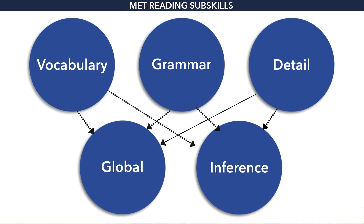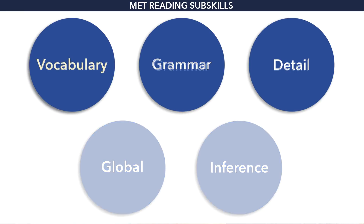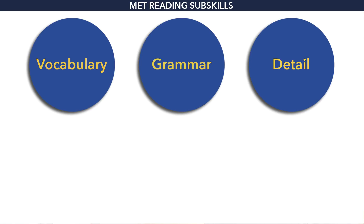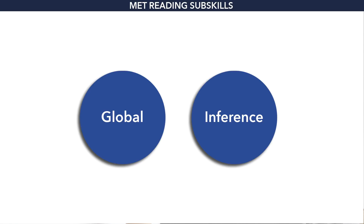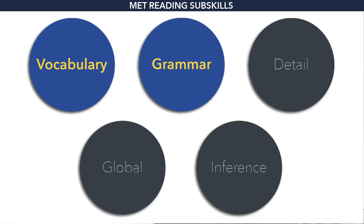I'd like to show you what our modeling revealed. Our modeling shows that you first need to learn vocabulary, have a good base of vocabulary, a good knowledge of the structure of English, and be able to read for detail. It is the ability to do these three that allows you to go on and develop mastery in global reading as well as in reading for inference. In many ways, these are the real reading functions, and here is the language base you need in order to be able to perform them.